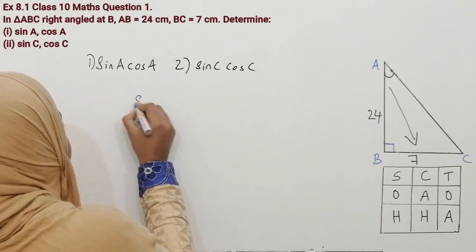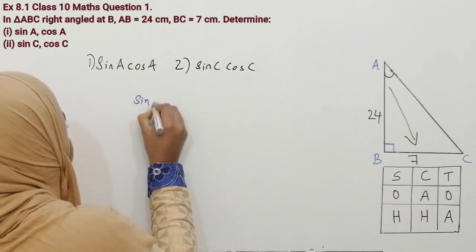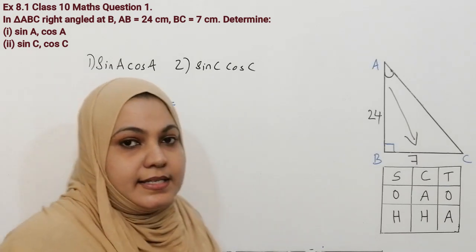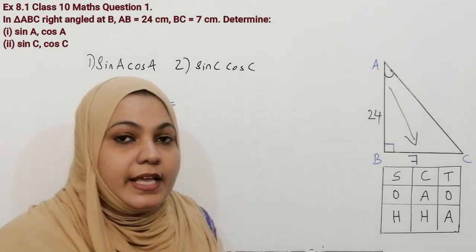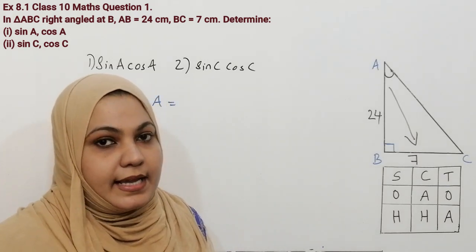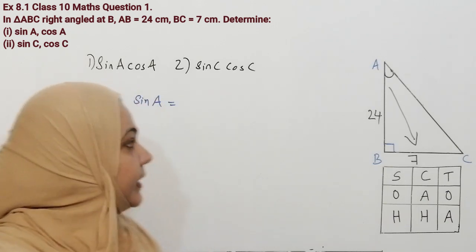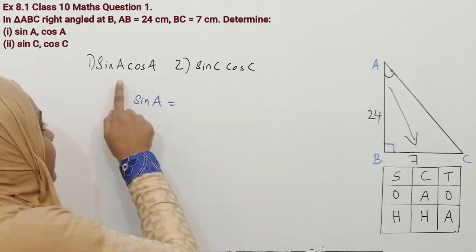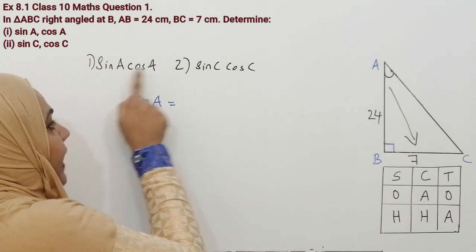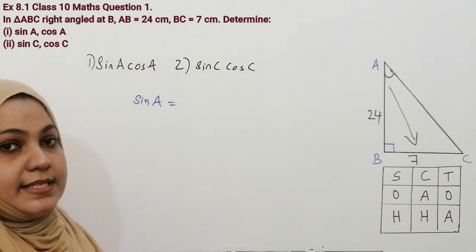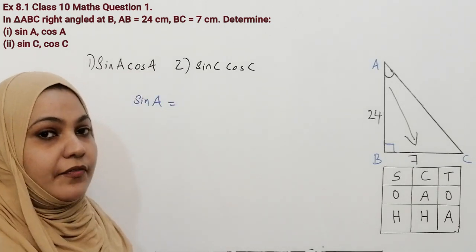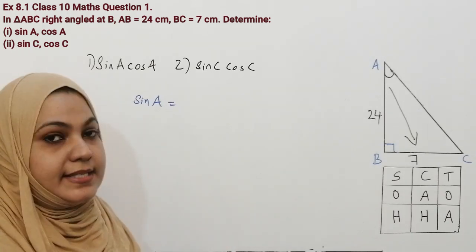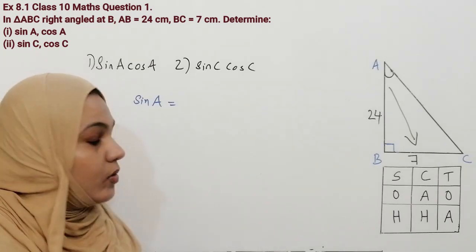First we can start — what is sin A? While solving the answers you should be very careful about the reference angle, because in this question there are two sub-questions. In the first question the reference angle is A, and in the second question the reference angle is C. Do not confuse with the reference angle — if you make a mistake in choosing the reference angle, your answer will be wrong.